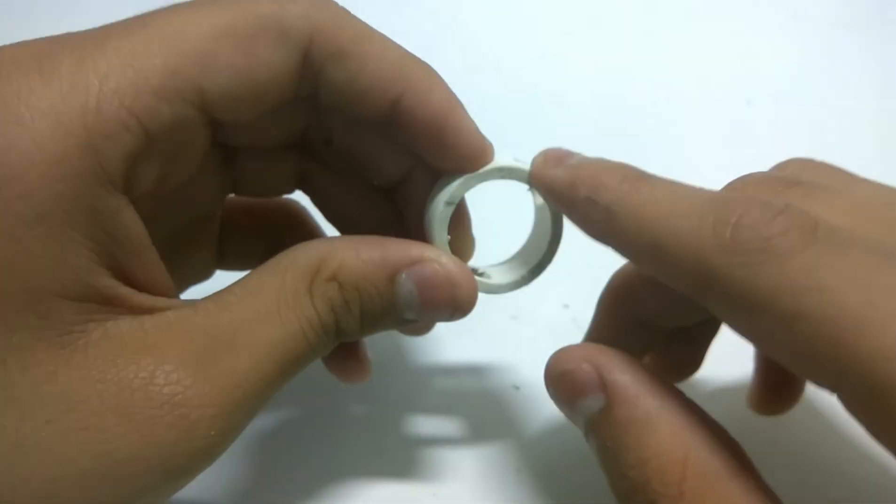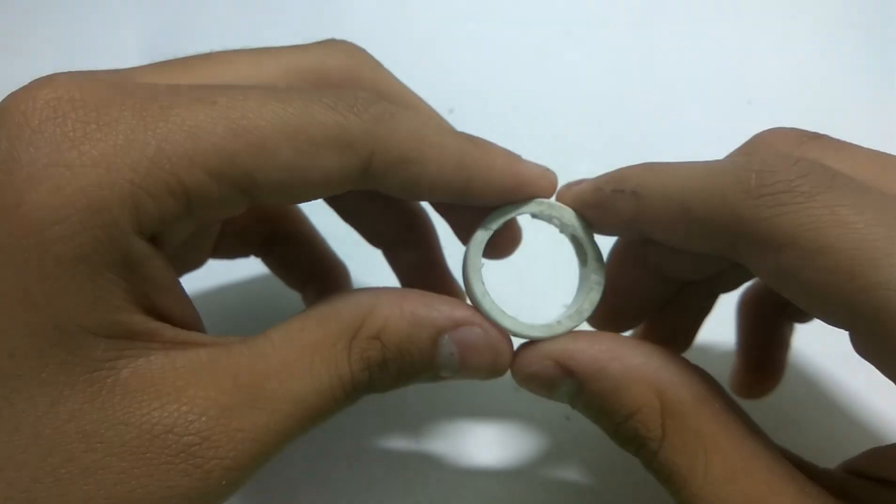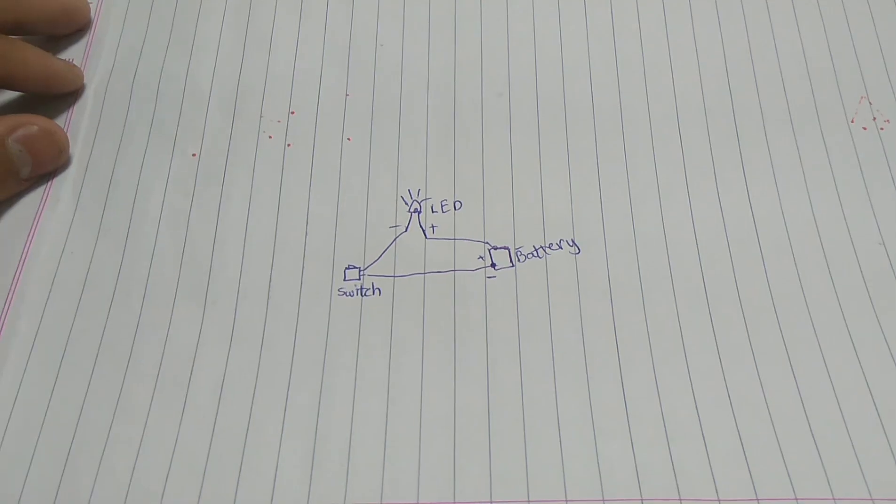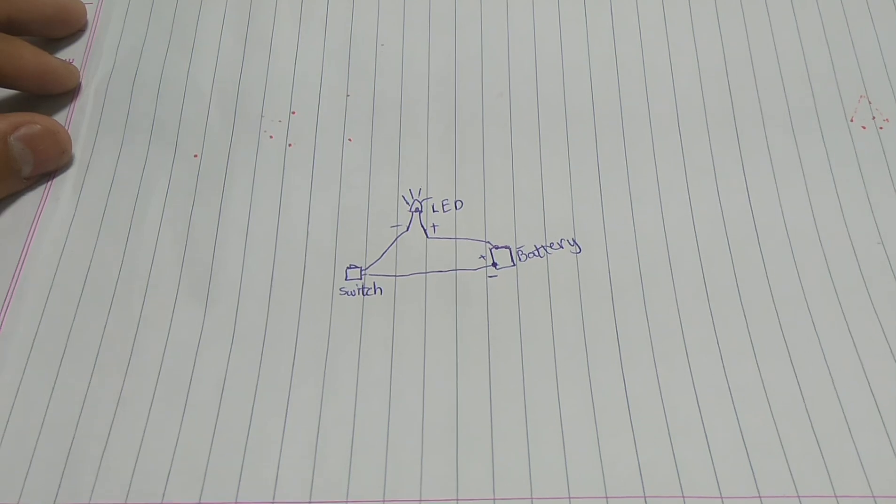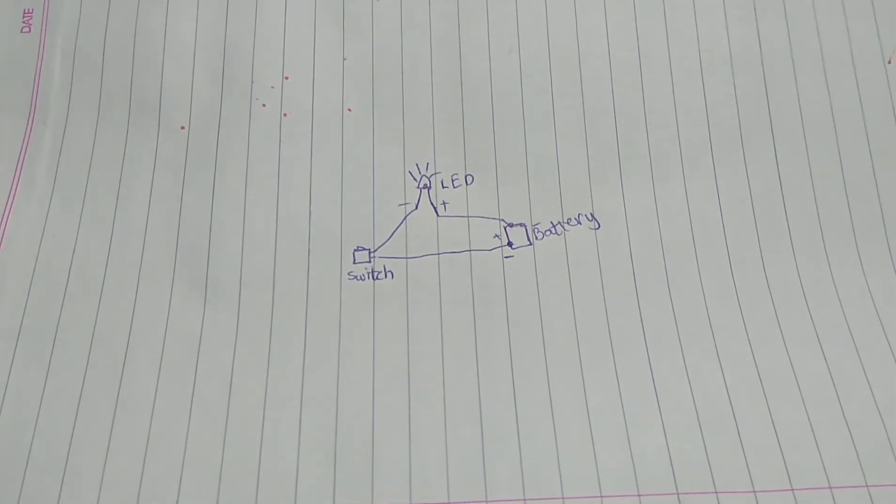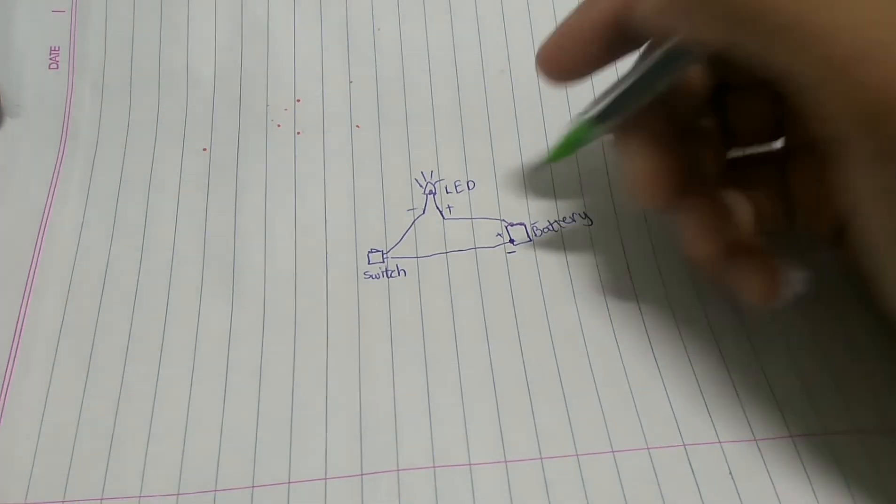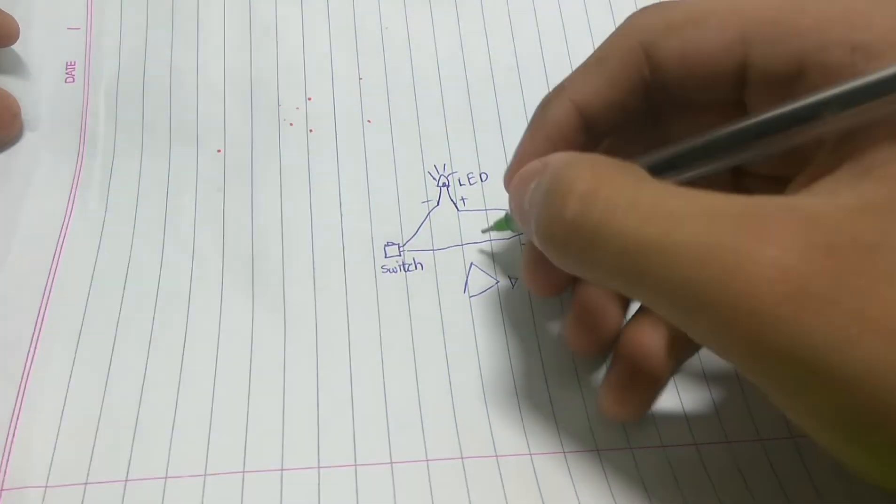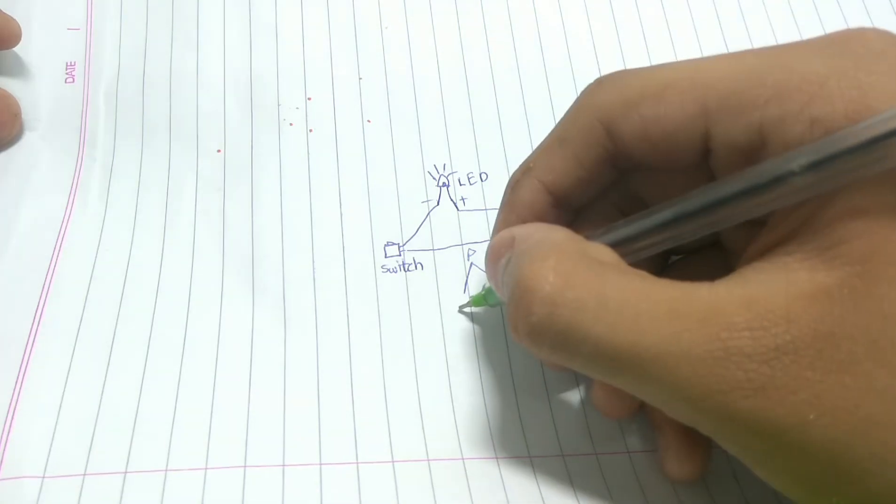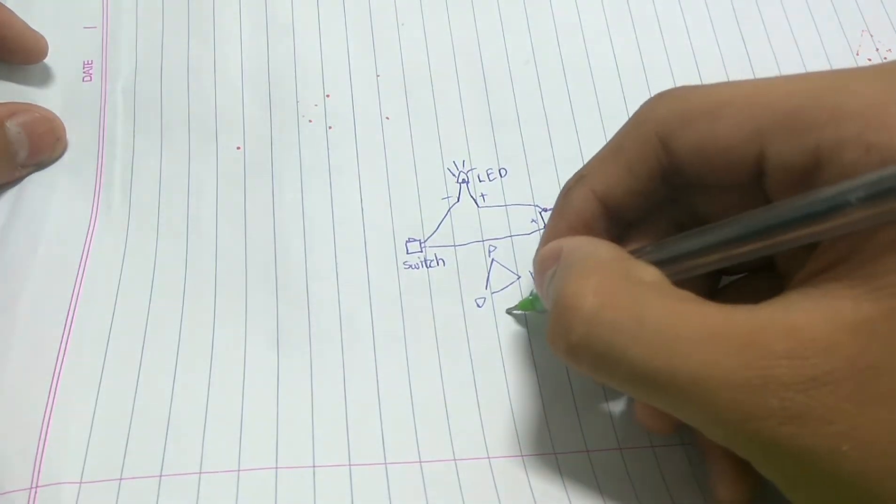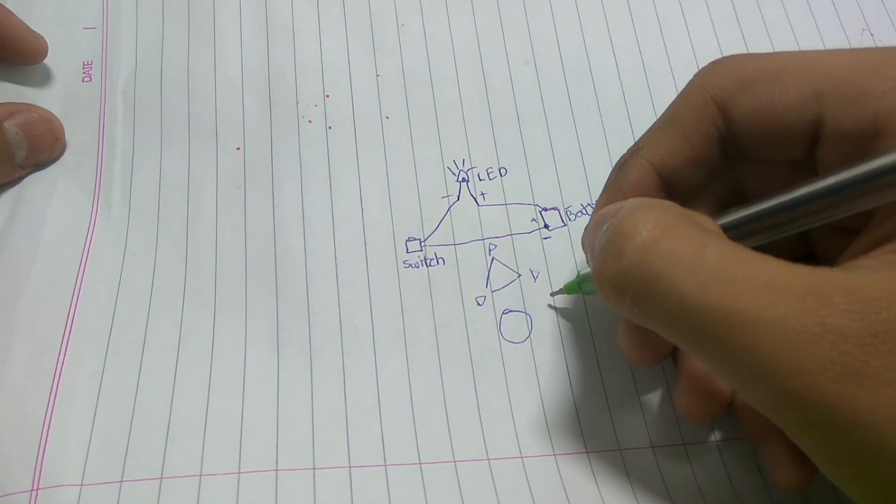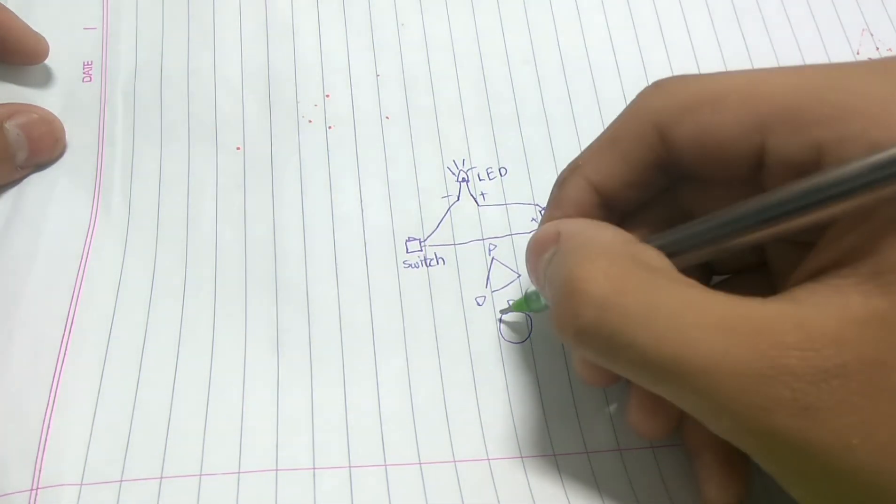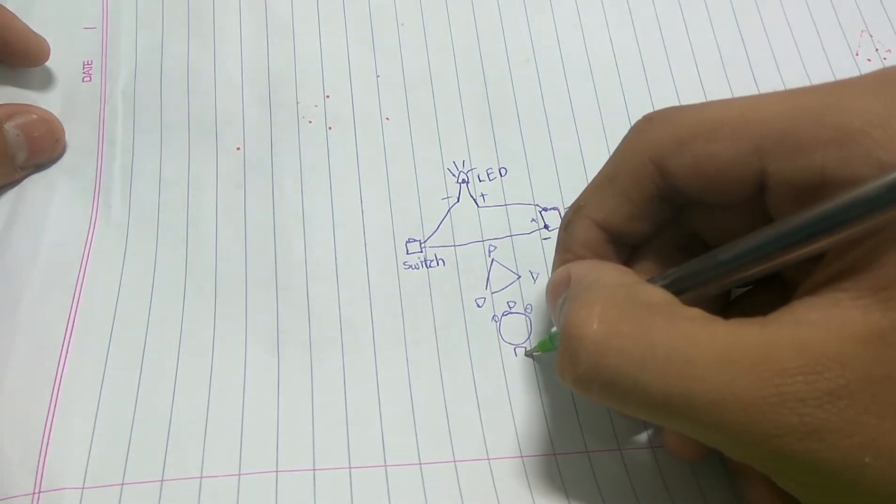The basic diagram that we know is something like this - a triangle. As you can see, here is the battery, here is the LED, and here is the switch. But in our ring, it will be like a circle. Here will be the LED, here is the battery, here is the battery, and here is the switch.